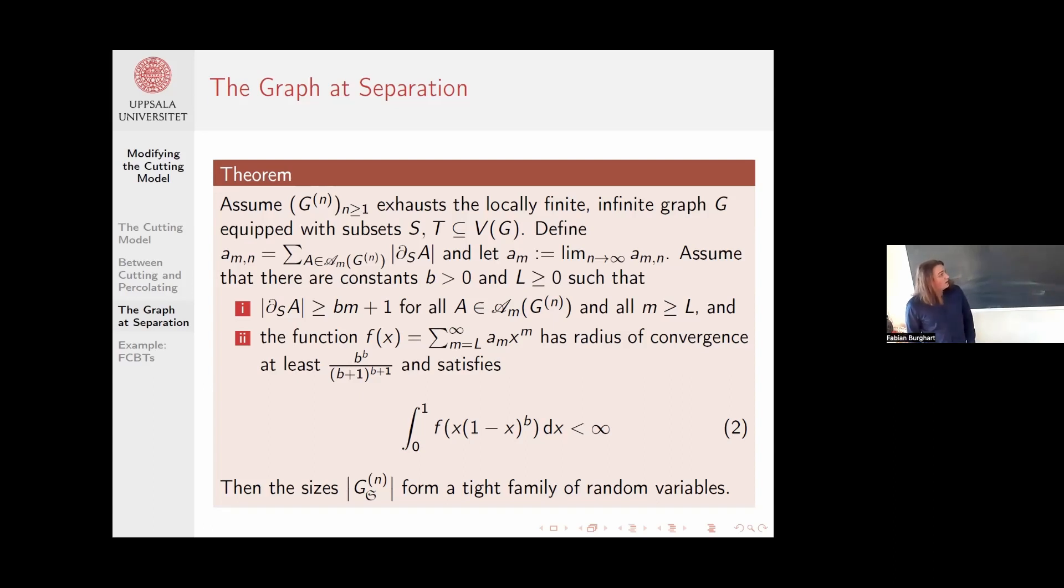Of course, the condition on the radius of convergence is there just to ensure that the integral is well-defined. This B to the B or B plus one to the B plus one is actually the maximum of the inner functions in the integral. But under these technical conditions, it then follows that the size of the graph at separation for the nth graph in the sequence forms a tight family of random variables. Why is this relevant? It turns out that if I'm in a situation where I have tightness here, this in particular means that what remains at separation is very small. So if I know the cutting number, I can transfer the result to the separation number because I know there are only a few cuts left from separation to get the cutting number.